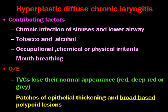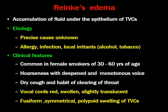On examination in hyperplastic diffuse chronic laryngitis, the two vocal cords lose their normal appearance. There will be red or deep red to gray patches of epithelial thickening, and broad-based polypoid lesions can be seen on examination of the vocal cords by indirect laryngoscopy or flexible nasopharyngolaryngoscopy.